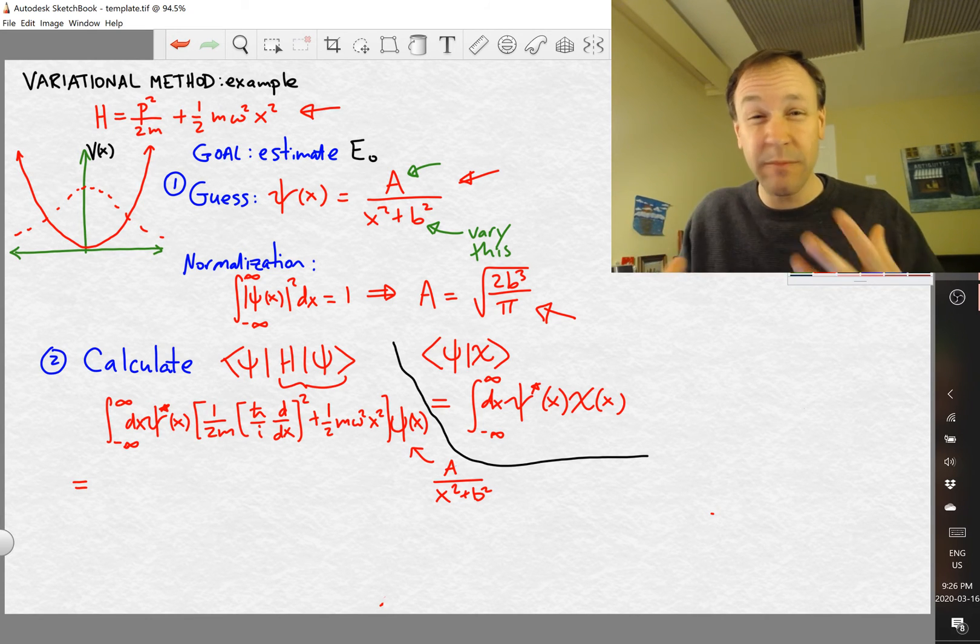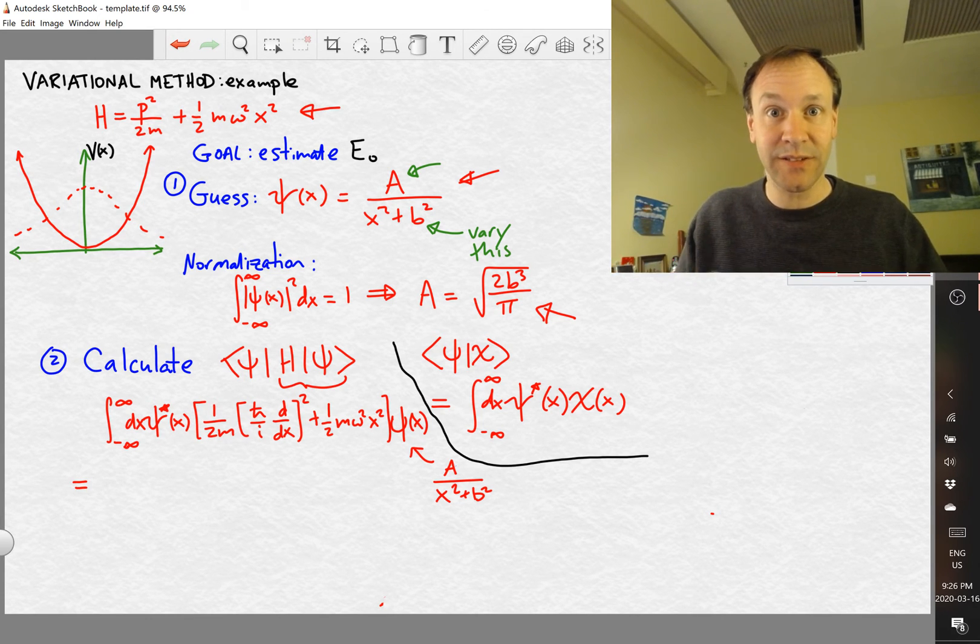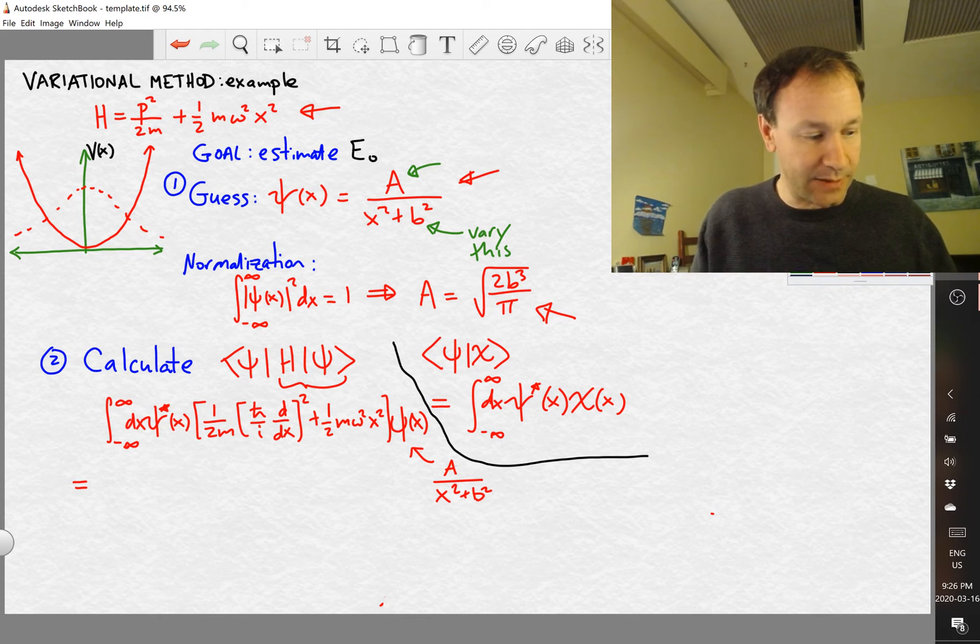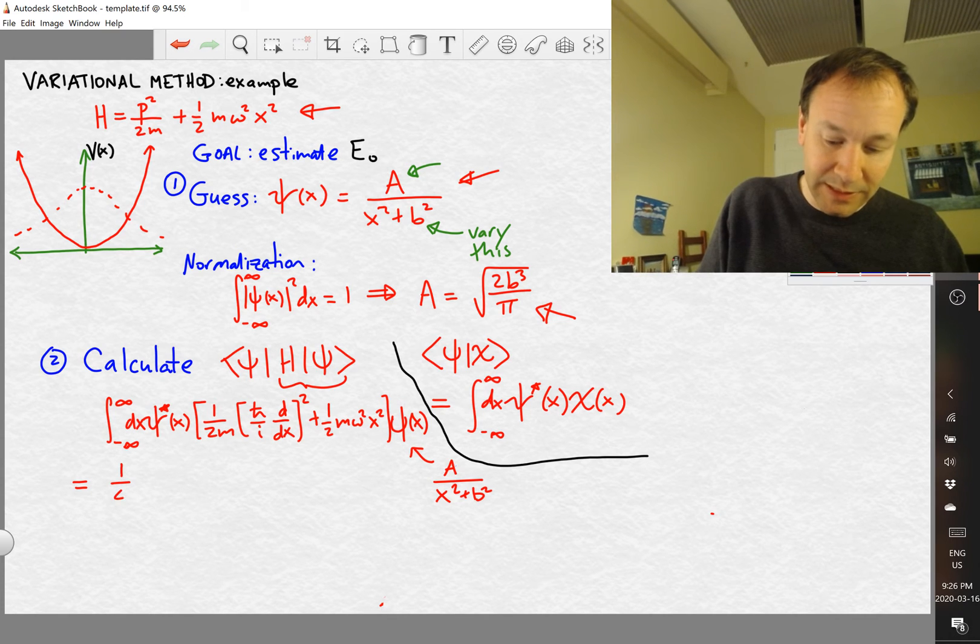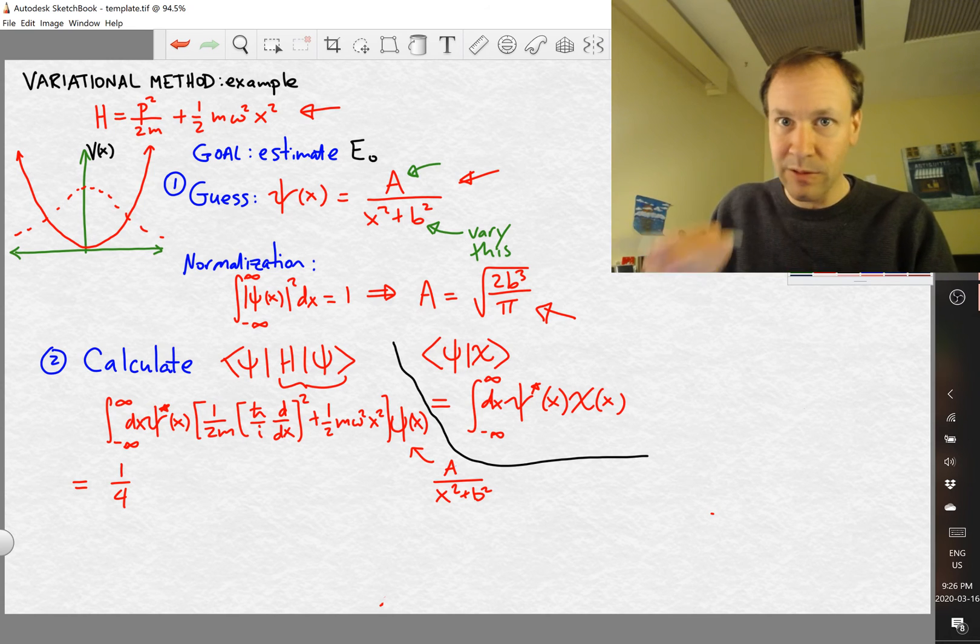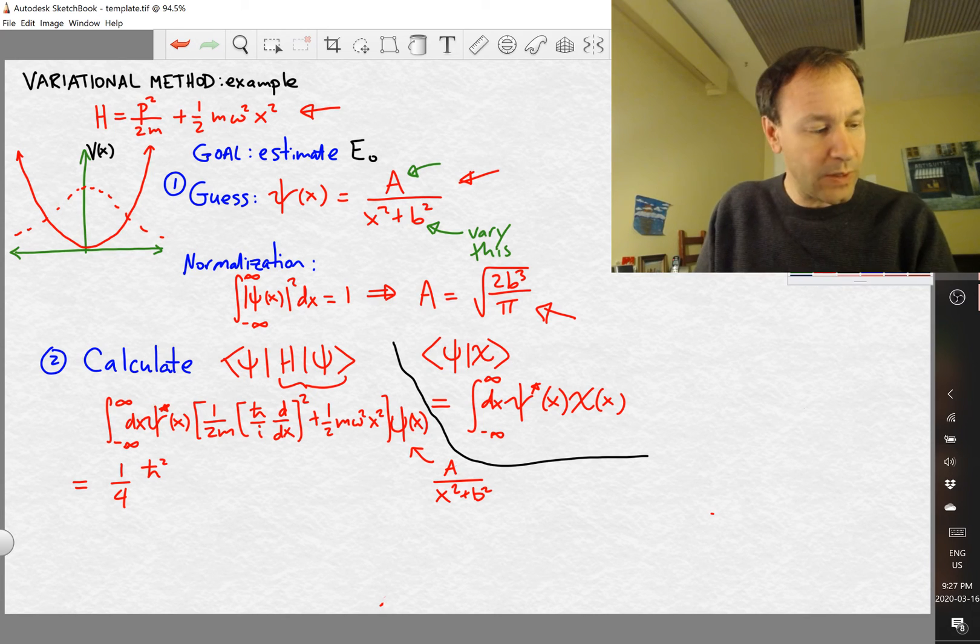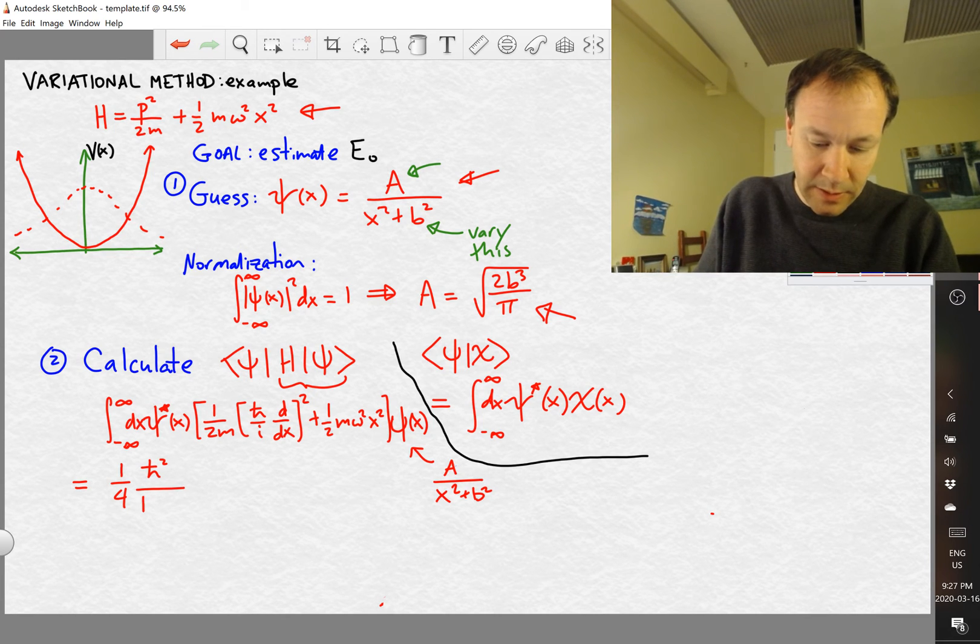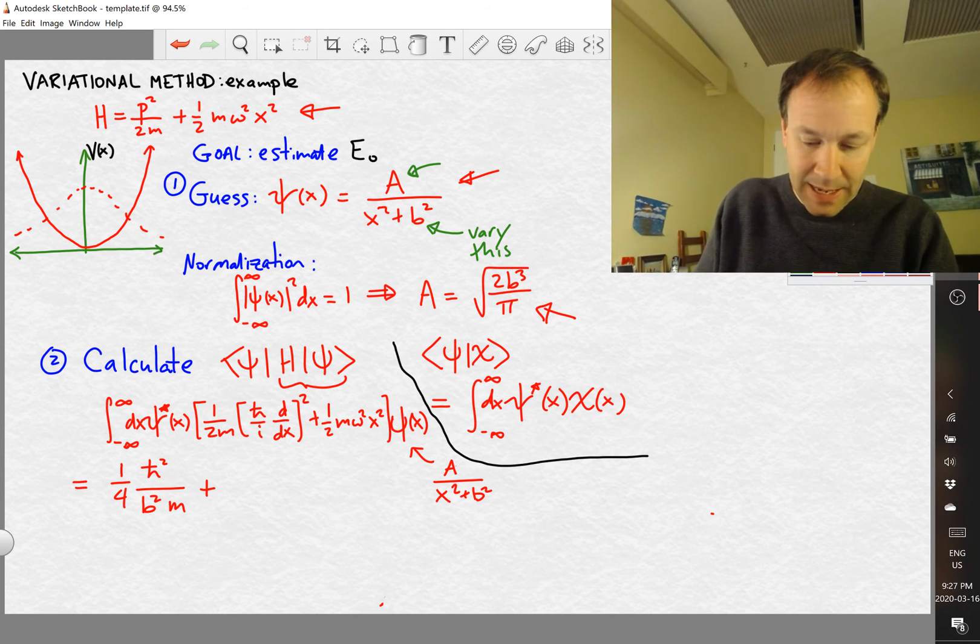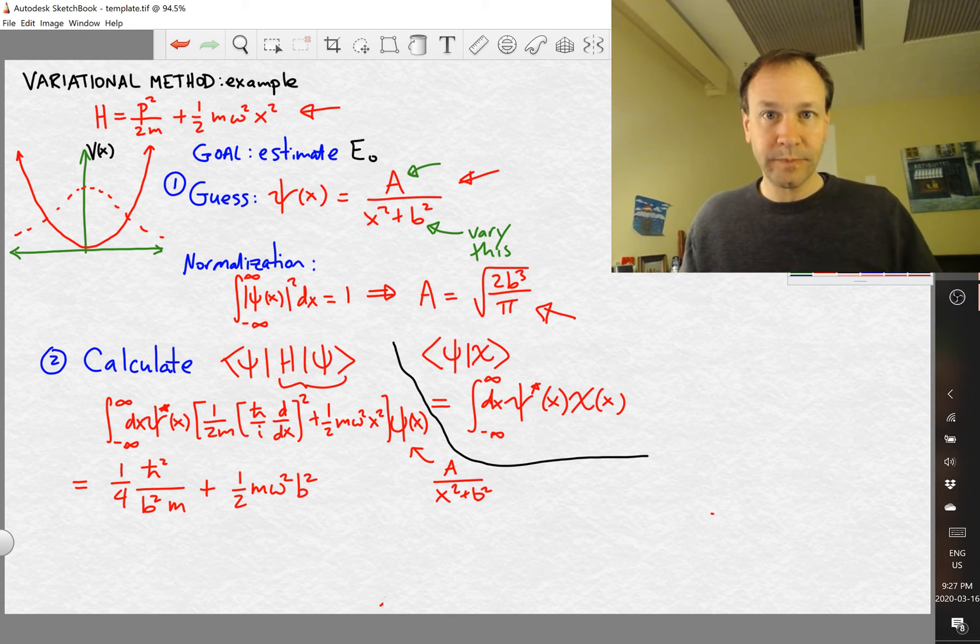So that is the integral that we need to evaluate. And now we can just do this. So we just want to plug in ψ of x is A over x squared plus b squared. That's our value for A. And again, I'm going to assume that we could just do all of these integrals. So it's a little bit of work. I'm not going to do it here, but I'll write down the answer. So the answer turns out to be relatively simple. It's integrals that we can ultimately do analytically or using a table or Wolfram Alpha. So we get one quarter ℏ squared over b squared M, that's from the first term. And then from the second term, we get one half M omega squared b squared.